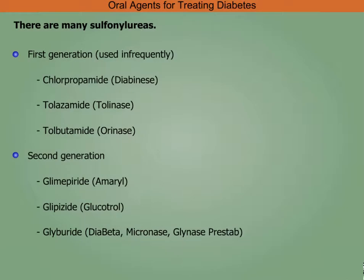There are many sulfonylureas. First generation includes chlorpropamide, tolazamide, and tolbutamide. Second generation includes glimepiride, glipizide, and glyburide.